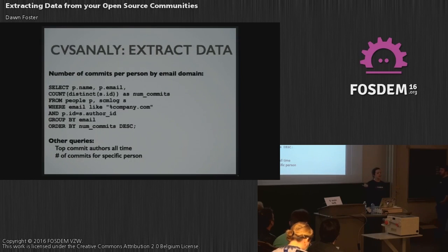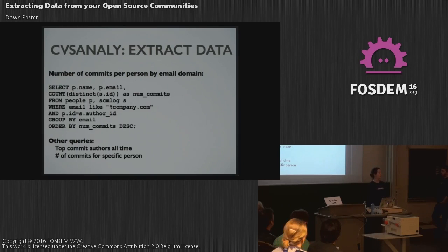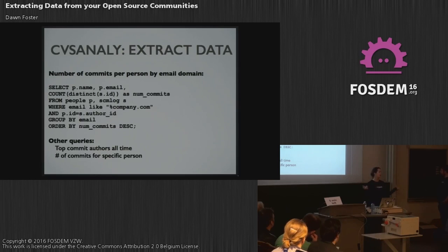When you're looking at source code data with CVSAnaly, it's very similar. This is a simple SQL query that looks at the number of commits per person based on an email domain. Other queries you can write: you can look at top authors of all time — the people that have made the most commits, which is generally pretty interesting. You can also look at the number of commits for a specific person, and you can time-bound this as well — for example, the number of commits for a specific person per year or per month. It's pretty simple to use.